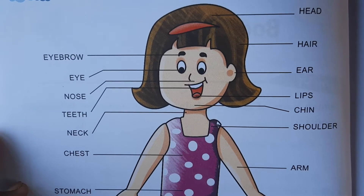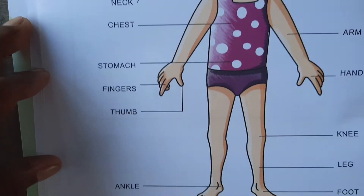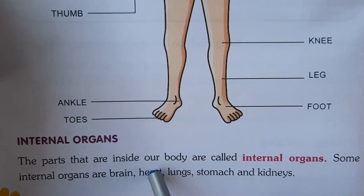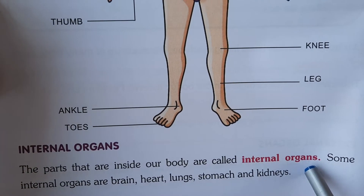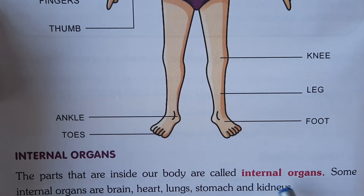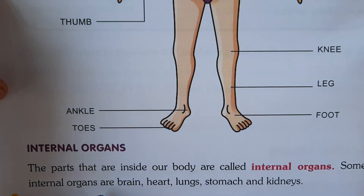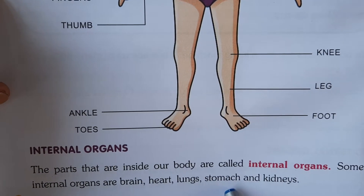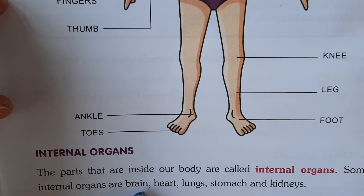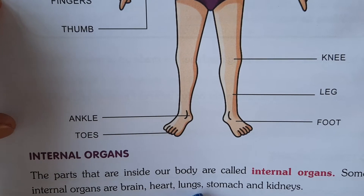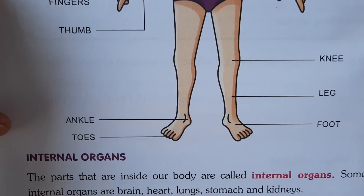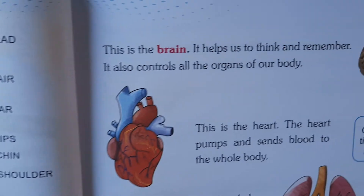Now let us come to internal organs. The organs that are inside our body are called internal organs. Some internal organs are brain, heart, lungs, stomach and kidneys.